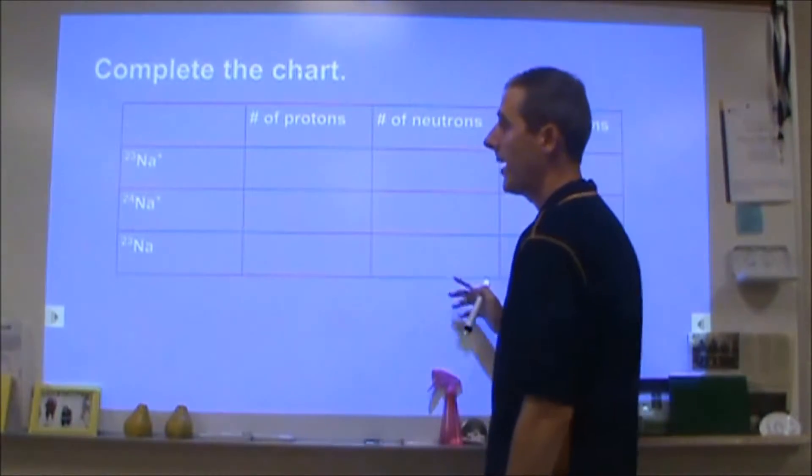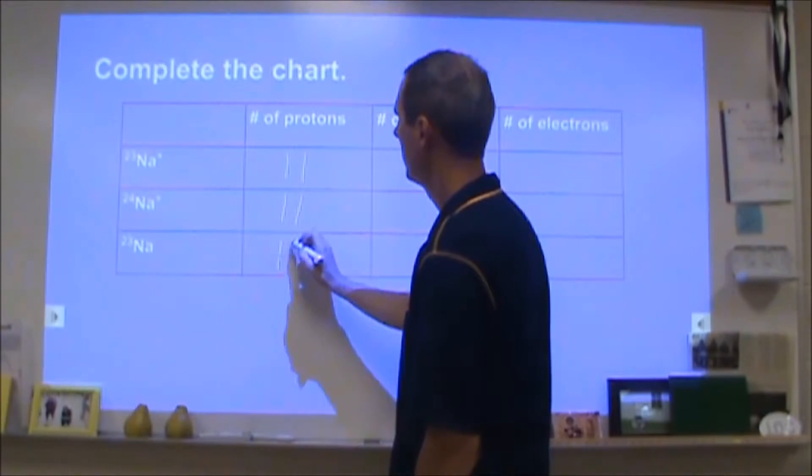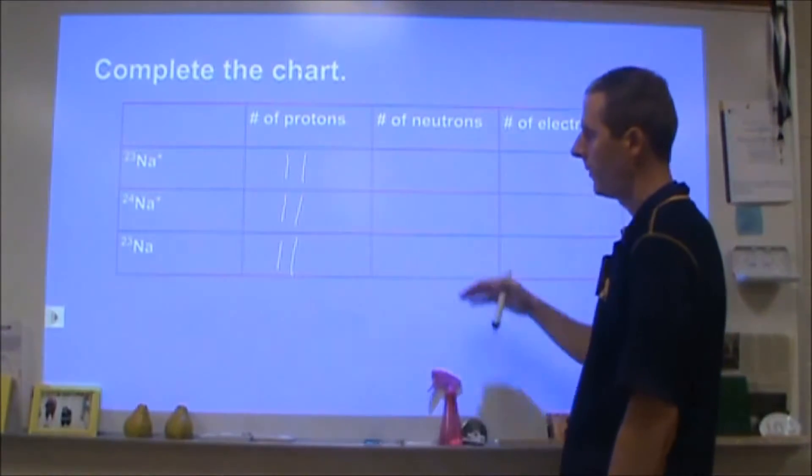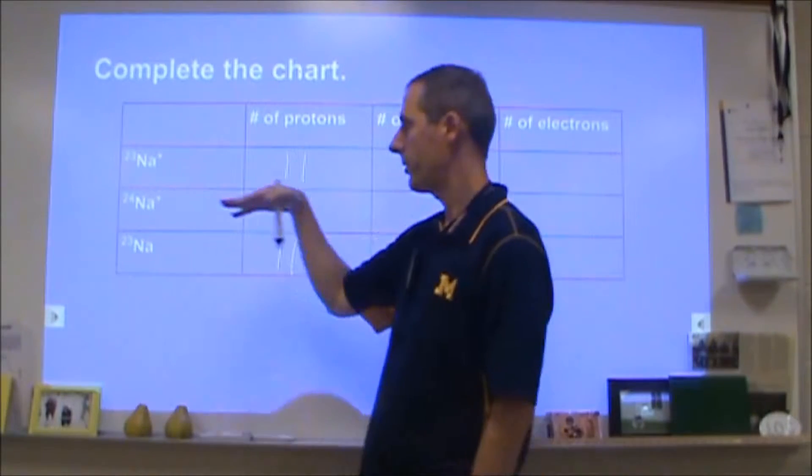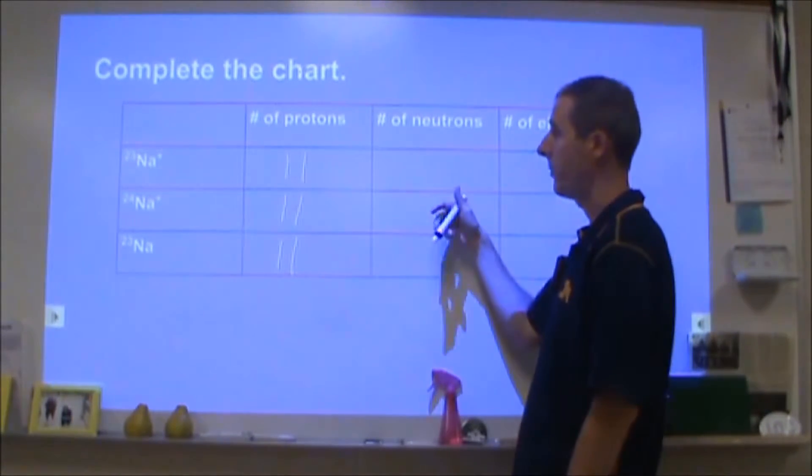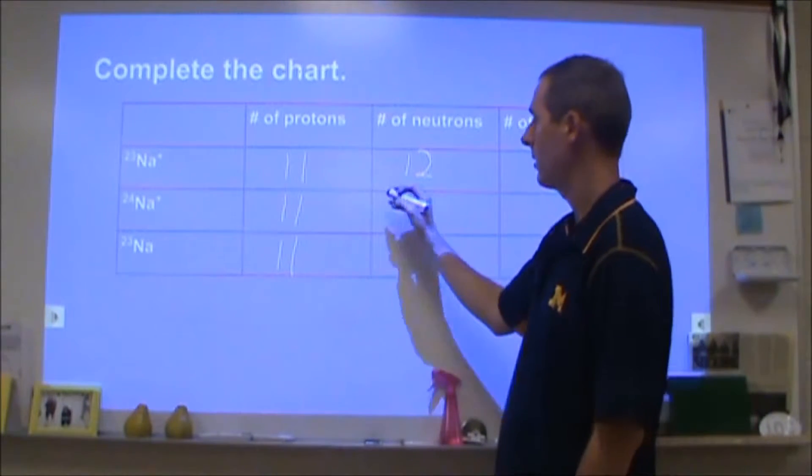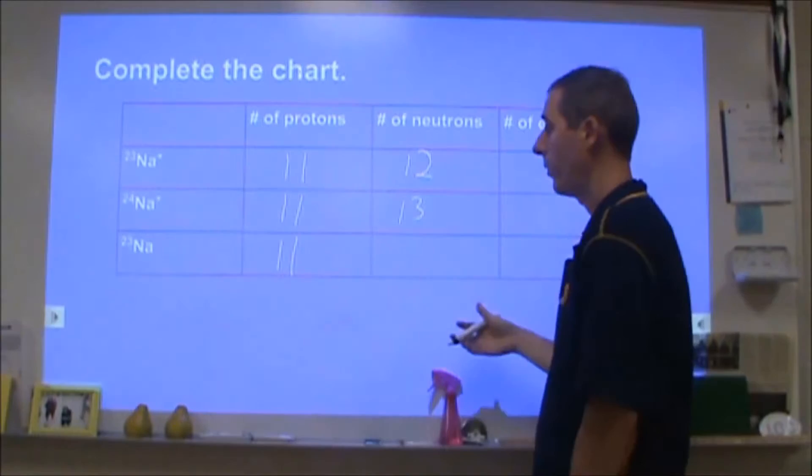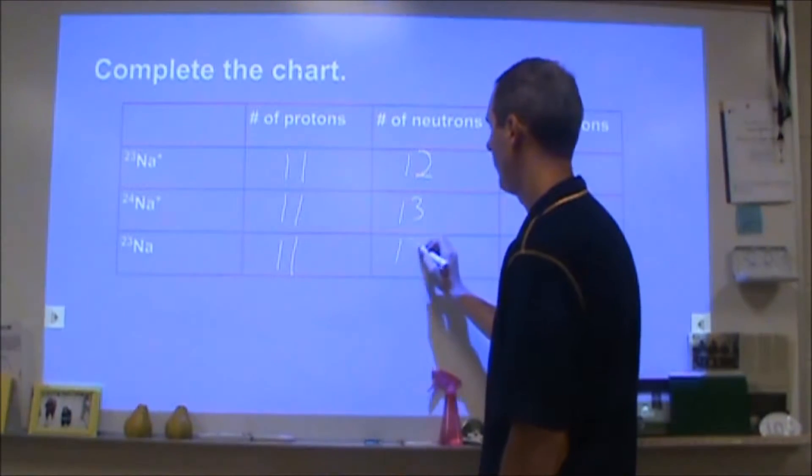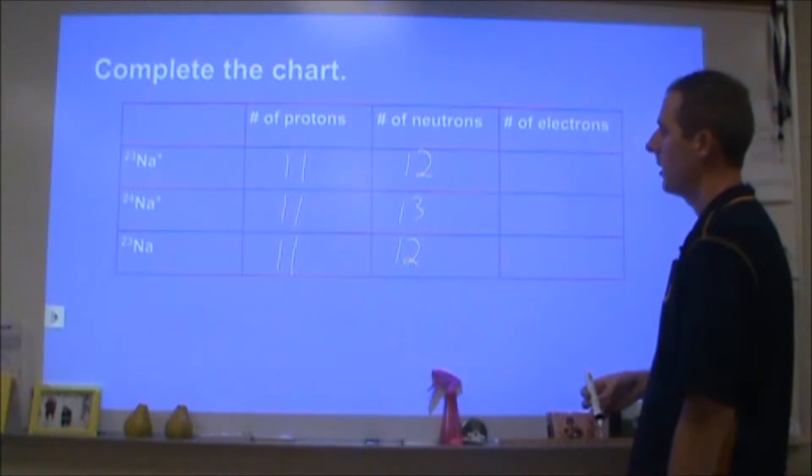Any sodium atom or ion is going to have 11 protons. For the number of neutrons, the mass number is the total number of things in the nucleus, so it's how many protons and neutrons combined. We have 12 neutrons here to give us 23 total, 13 in this particular ion to give us 24 total, and 12 here as well. You can subtract the mass number and the atomic number to get those neutrons.